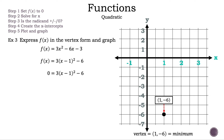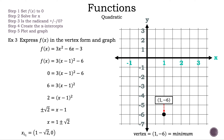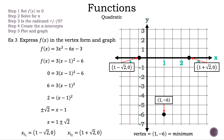Now let's find the x-intercepts. We set the output to 0 and solve for x. Let's add 6 to both sides, divide both sides by 3, take the square root on both sides, and add 1 to both sides. So now we have x is equal to 1 plus or minus the square root of 2. The first x-intercept is the point 1 minus the square root of 2, 0. The second x-intercept is the point 1 plus the square root of 2, 0. Let's plot them and connect the dots. That is example 3.